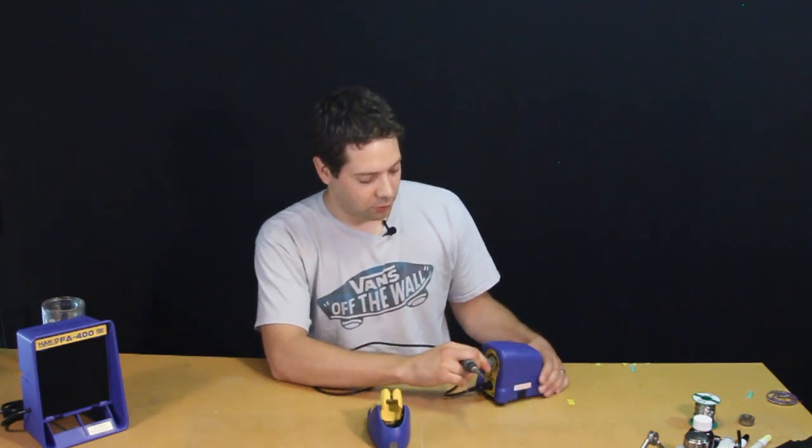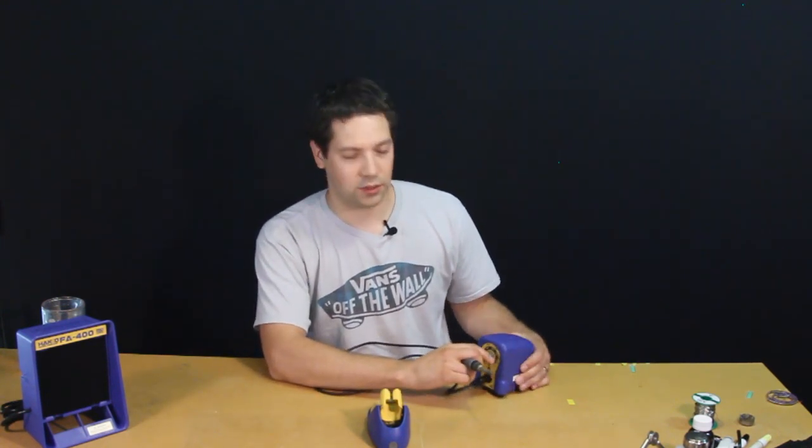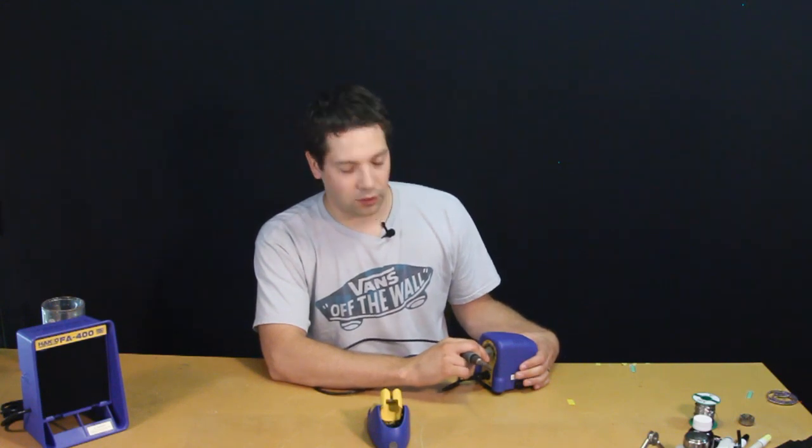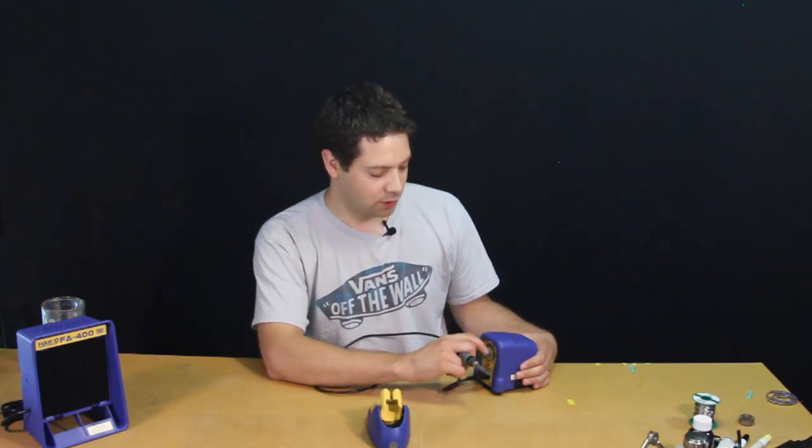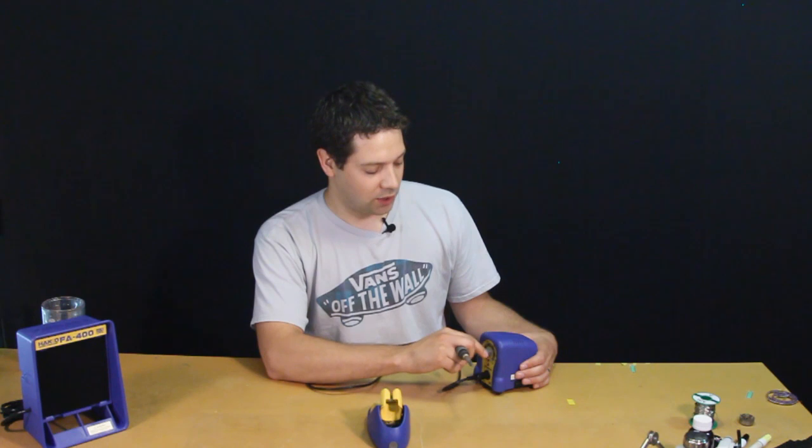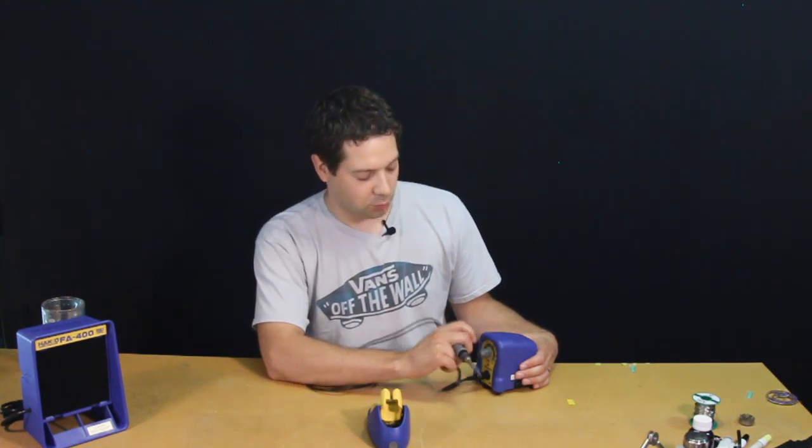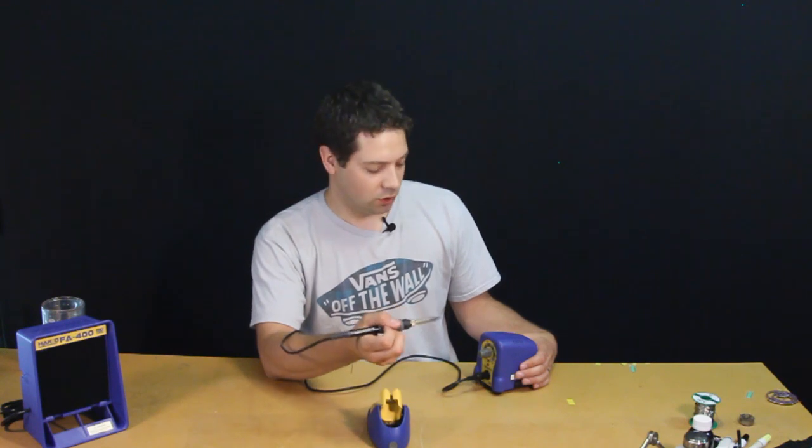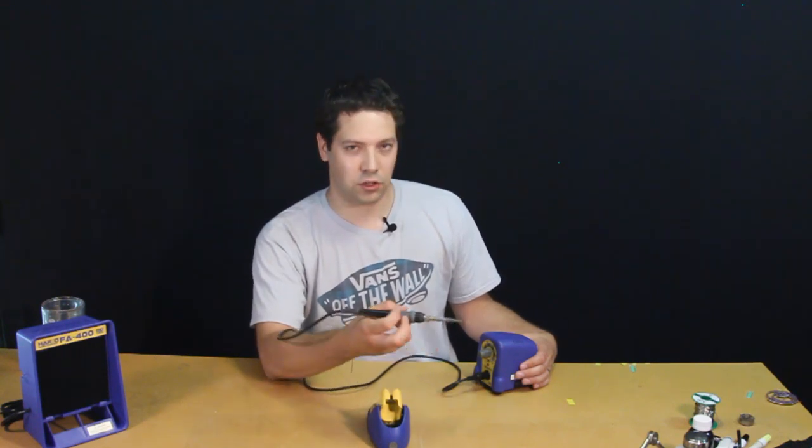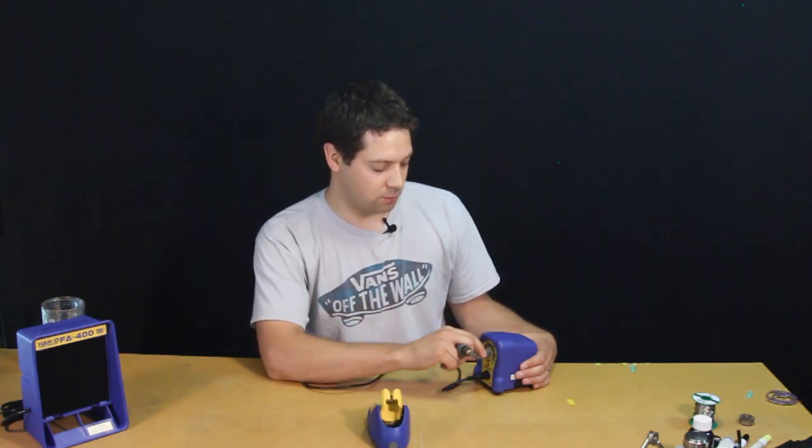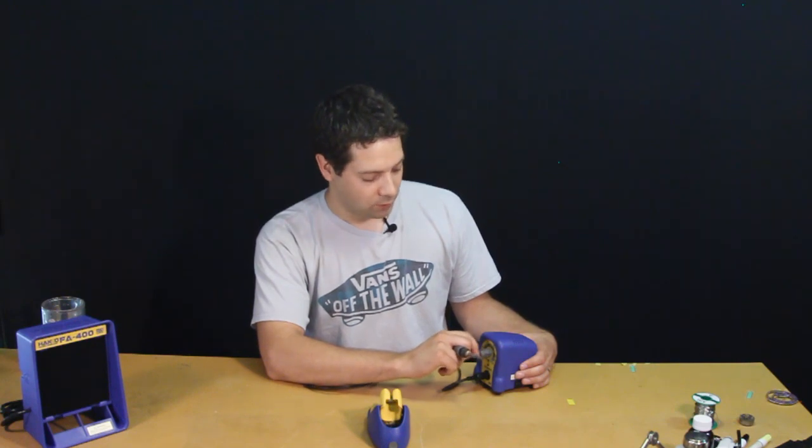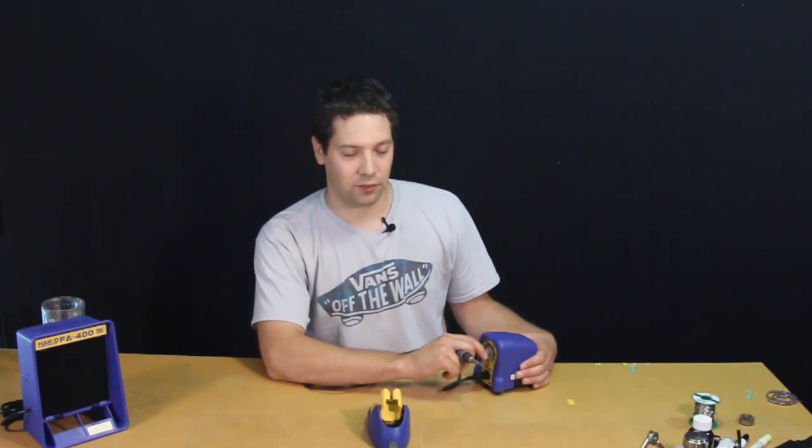This soldering iron also has variable temperature. We usually recommend you stay around 750 degrees for lead-free solder. It keeps your tip in good working order if you're around that area. If you bring it up higher, you can do that to solder heavier gauge wire or large pads on a PCB, but we'd recommend going back down to 750 degrees once you're done.